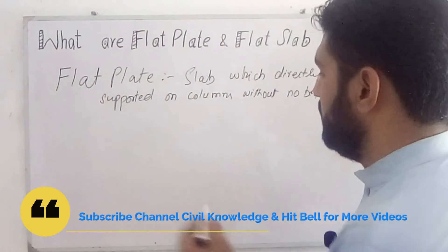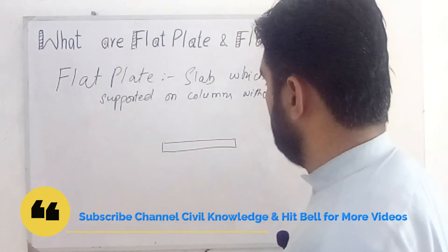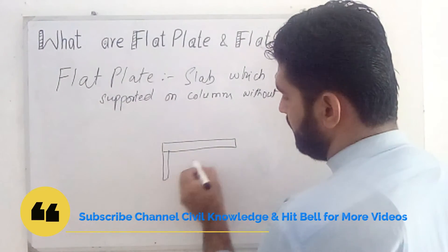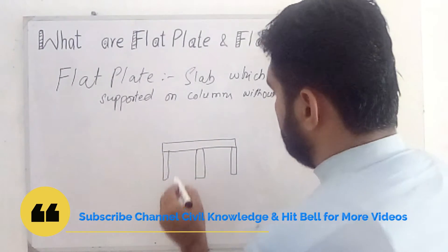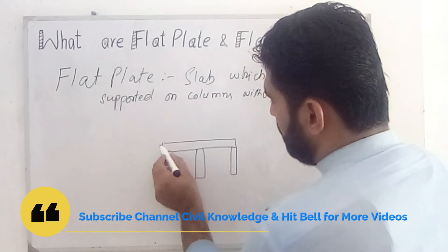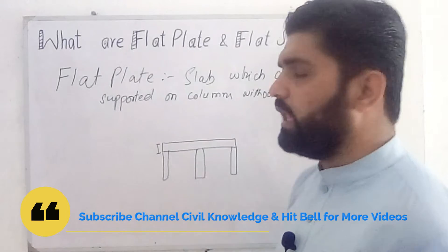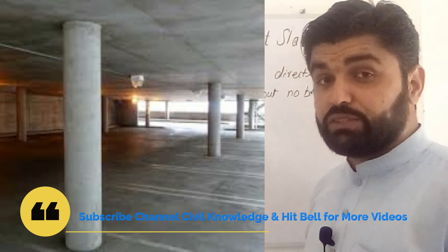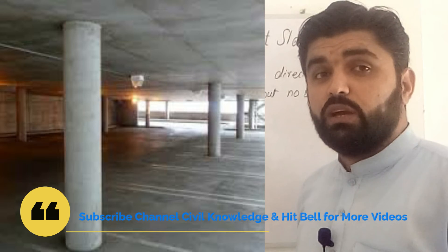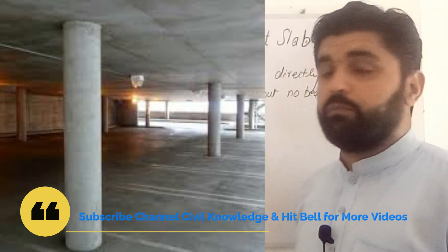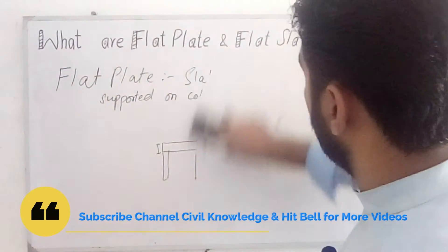This is our slab and these are the columns. You can see that the whole thickness of the slab is uniform. You can also see in the picture that the slab has a completely uniform thickness — there is no non-uniformity in the thickness of the slab. This is a flat plate.